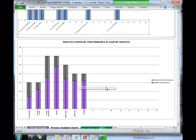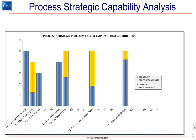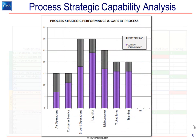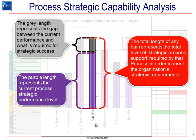Now let's go back and talk about how we analyze this. This obviously triggers the question of which processes are performing and not performing against the strategic intent. We should be able to add up the score down the columns and provide you with a chart that looks a bit like this. The interpretation is similar to the one we just looked at by strategic objective, but now we've summarized the data by process. The total height of the bar represents the performance level expected and required from this process in order to achieve strategic success. The purple portion represents how well the process is currently performing, and the gray portion represents the gap between how it's currently performing and how you need it to perform to achieve strategic success.